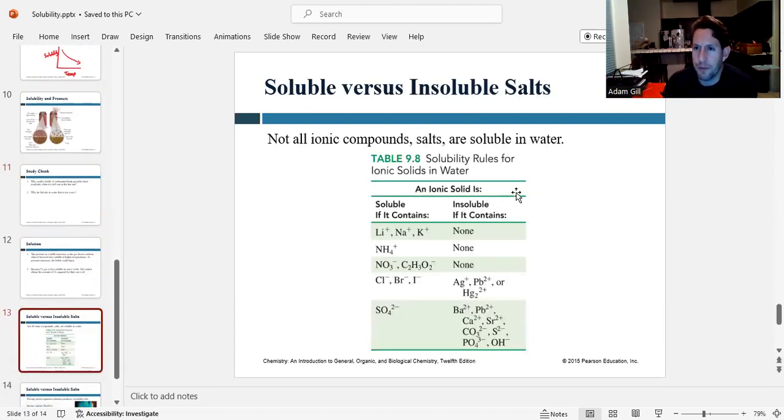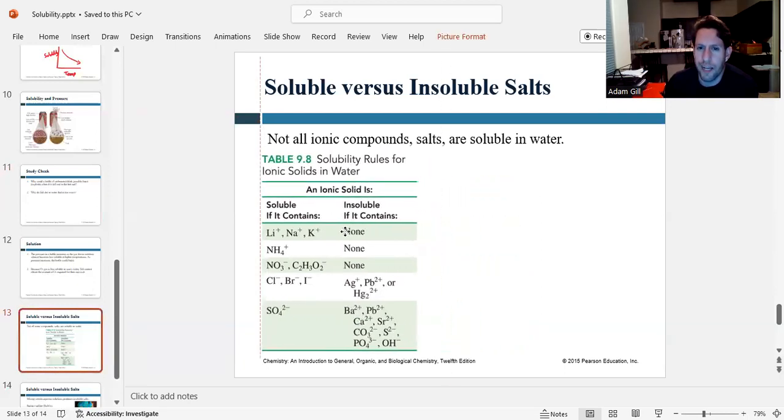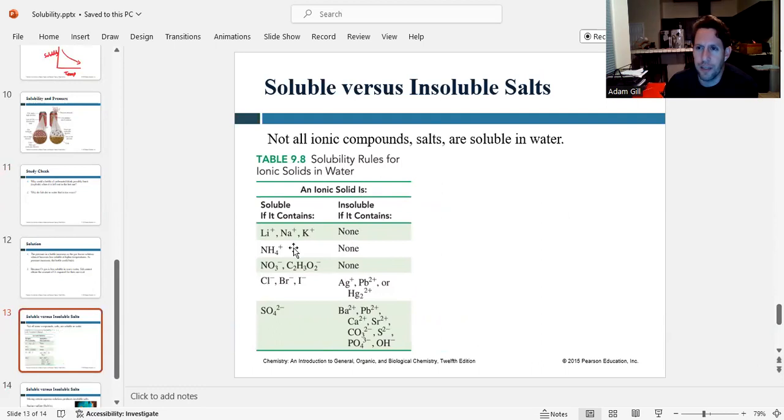So the next thing we want to talk about is solubility rules for ionic compounds or salts. Not all ionic compounds are soluble. There's no rationale to this other than it was experimentally determined. Now, I will give you this table on the exam. You don't have to memorize this, but you do need to be able to interpret it.